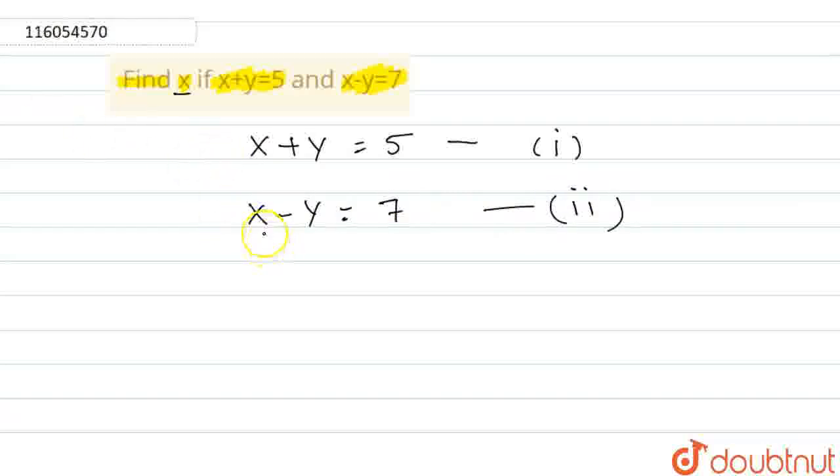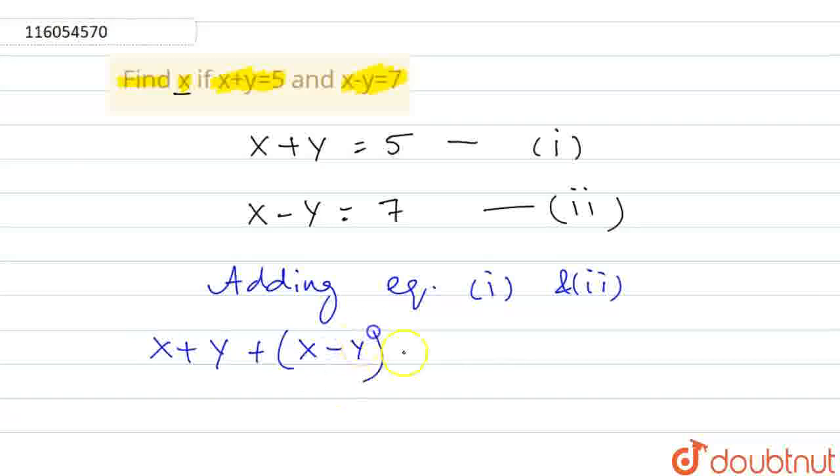So we need to find x value. To find out what we need to do, we need to add these equations. So adding equation 1 and 2. So x plus y plus x minus y is equal to 5 plus 7.